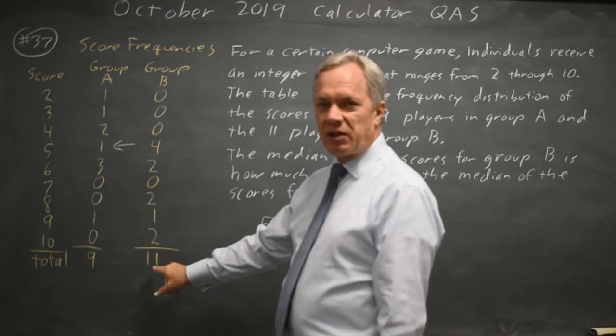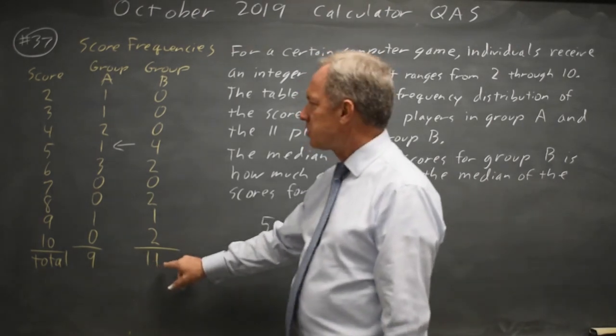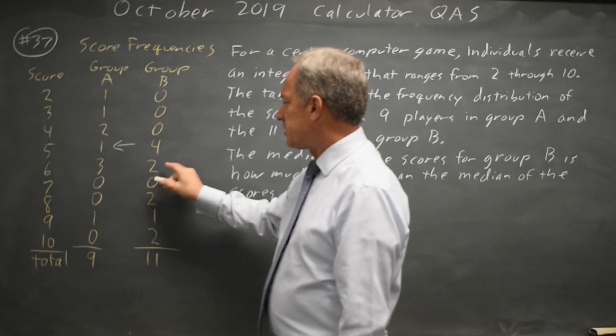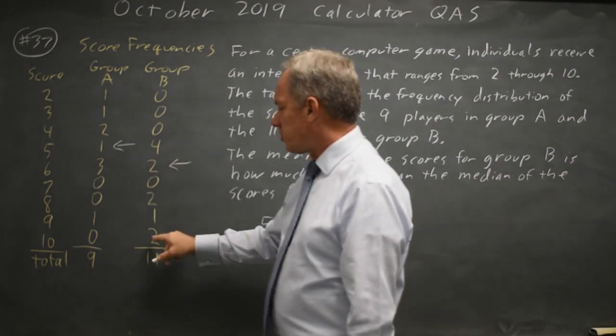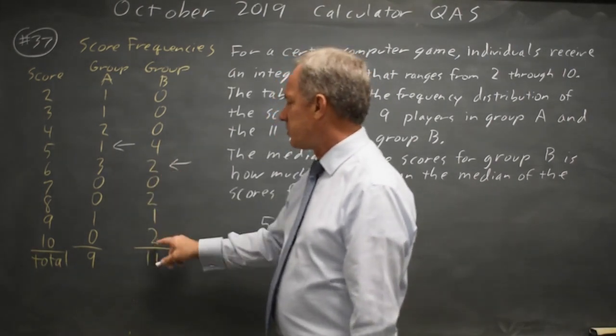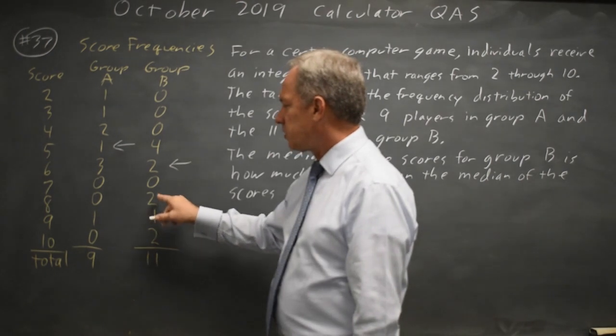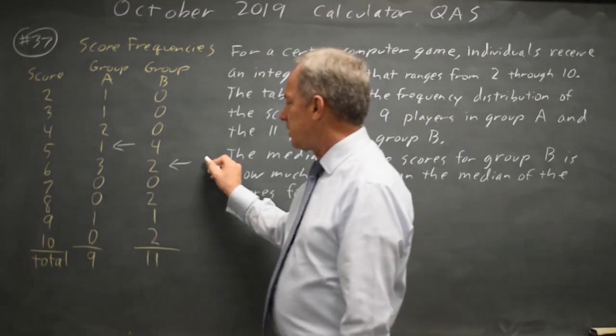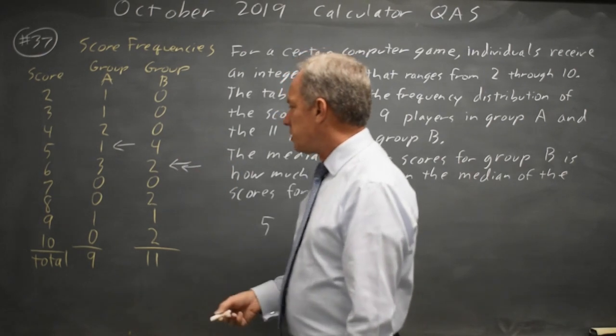The median for B, we have eleven scores, so that's number six from the top, four, five, six, or number six from the bottom. I'm sorry, that's number six from the bottom. Number six from the top is two, three, four, five. Number six and seven are in here, so that's the median.